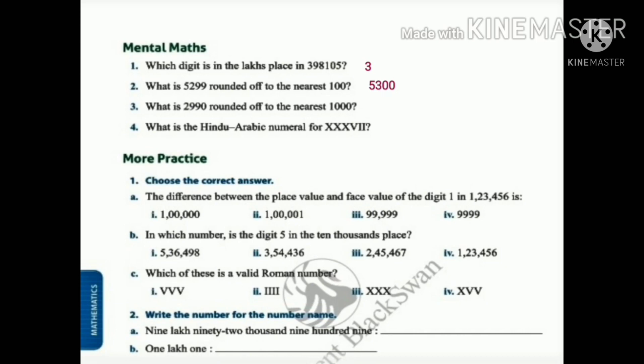Now what is 2,990 rounded off to the nearest 1000? We know that the digit in 100th place is 9 and it is more than 5, so the number is rounded to 3000. What is the Hindu Arabic numeral for XXXVII? We know that X stands for 10, so 10 plus 10 plus 10 is equal to 30, and VII stands for 7, so the answer is 37.